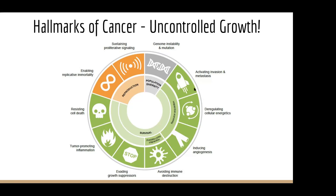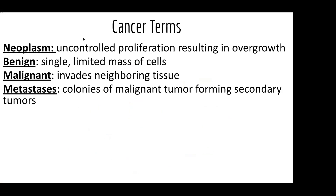Brief overview of cancer biology. You might have heard some different terms when people talk about cancer. The word 'neoplasm' refers to an uncontrolled proliferation of cells that results in some sort of overgrowth. A neoplasm is not necessarily cancer, because you could have different types of growth that are neoplasms.